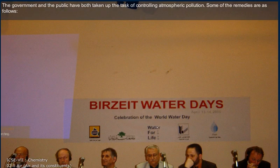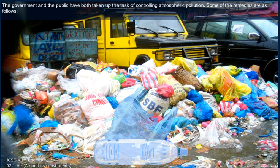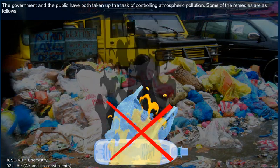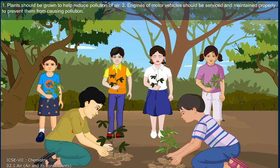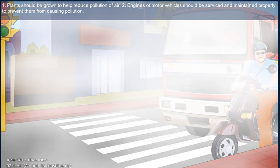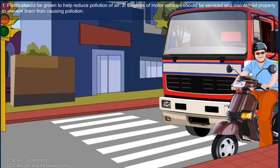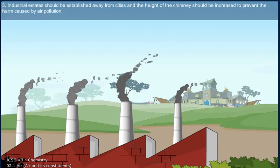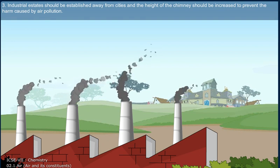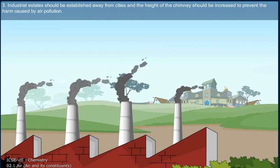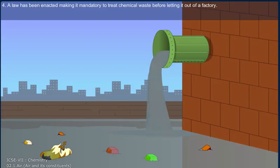The government and the public have both taken up the task of controlling atmospheric pollution. Some of the remedies are: 1. Plants should be grown to help reduce pollution of air. 2. Engines of motor vehicles should be serviced and maintained properly to prevent pollution. 3. Industrial estates should be established away from cities and the height of chimneys should be increased. 4. A law has been enacted making it mandatory to treat chemical waste before letting it out of a factory.